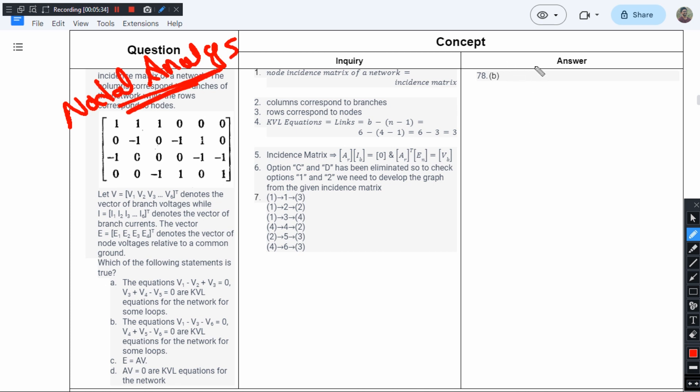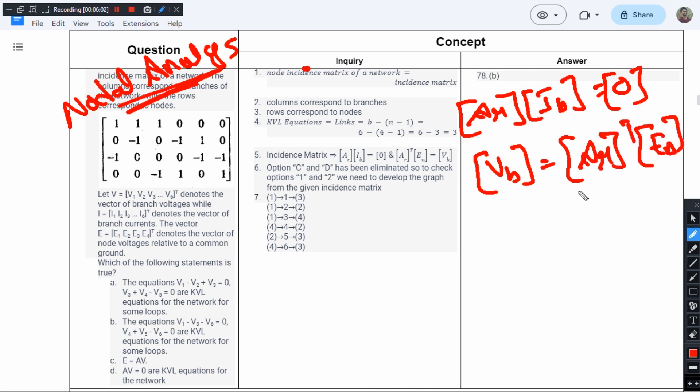The equations in matrix form will look like reduced incidence matrix into branch currents equals zero. Another equation to get the branch voltages: VB equals transpose of reduced incidence matrix into EN. Let me remind you, AR is a rectangular matrix in most cases—it could be square, but it's considered to be rectangular.